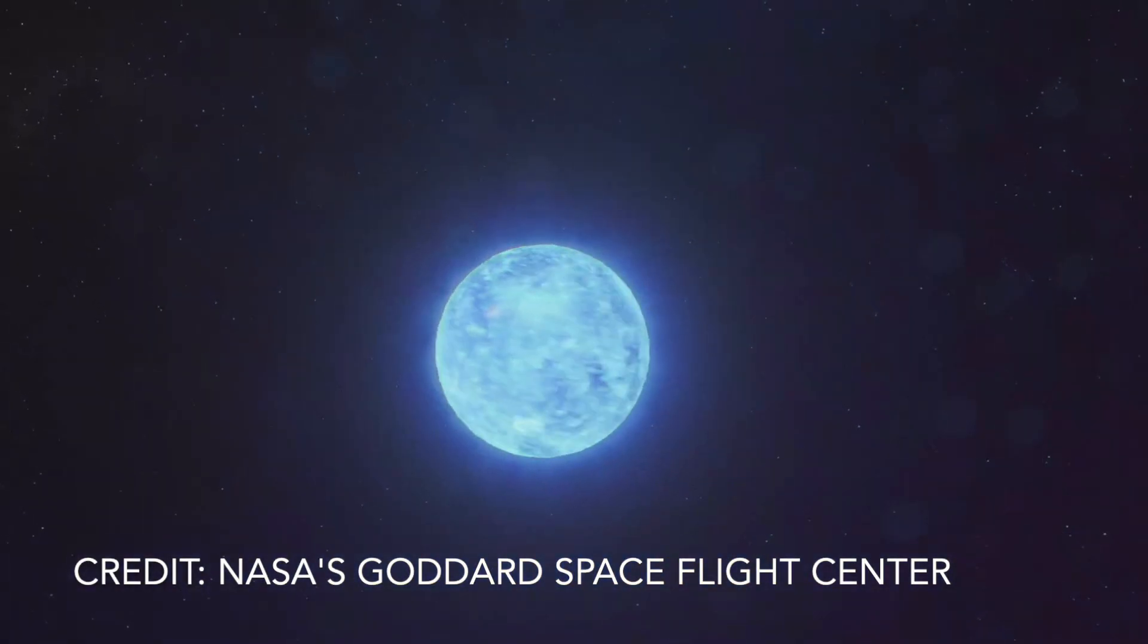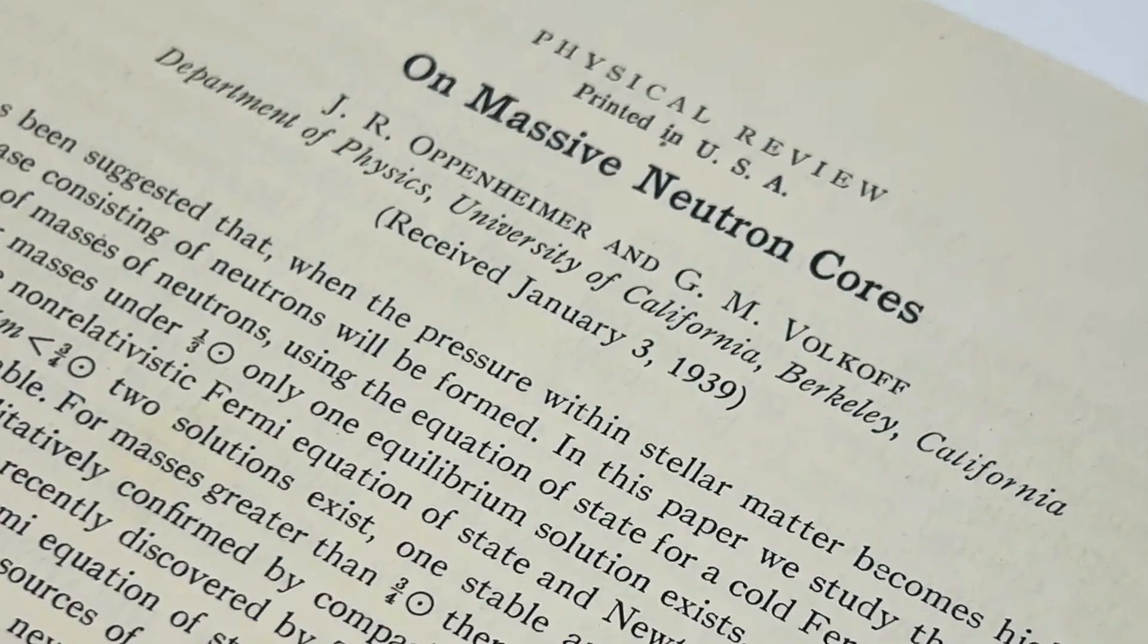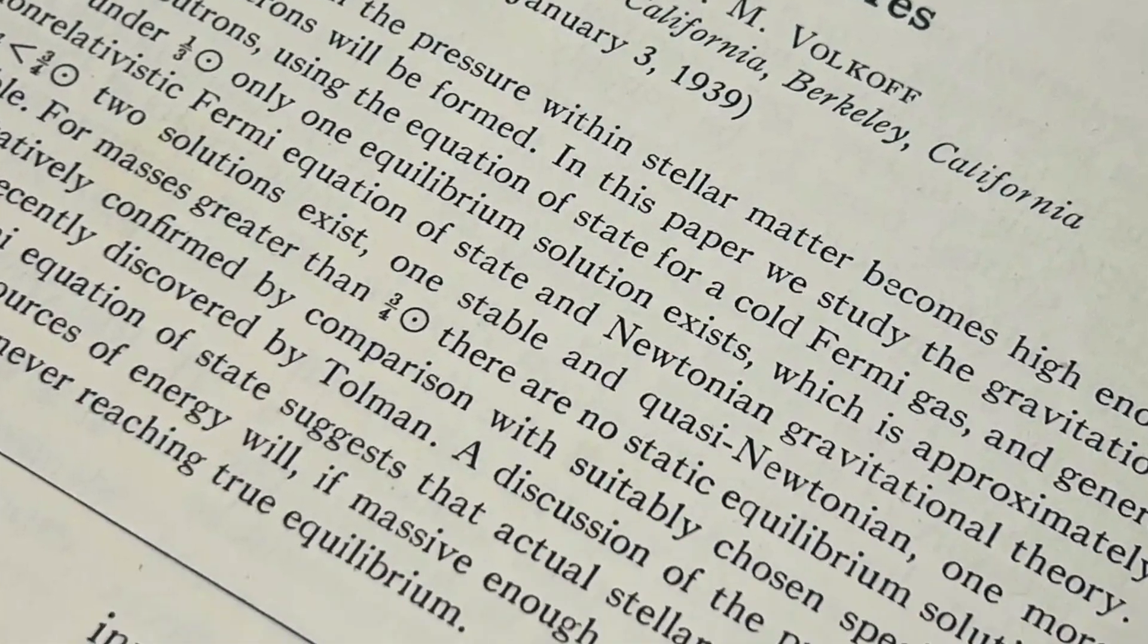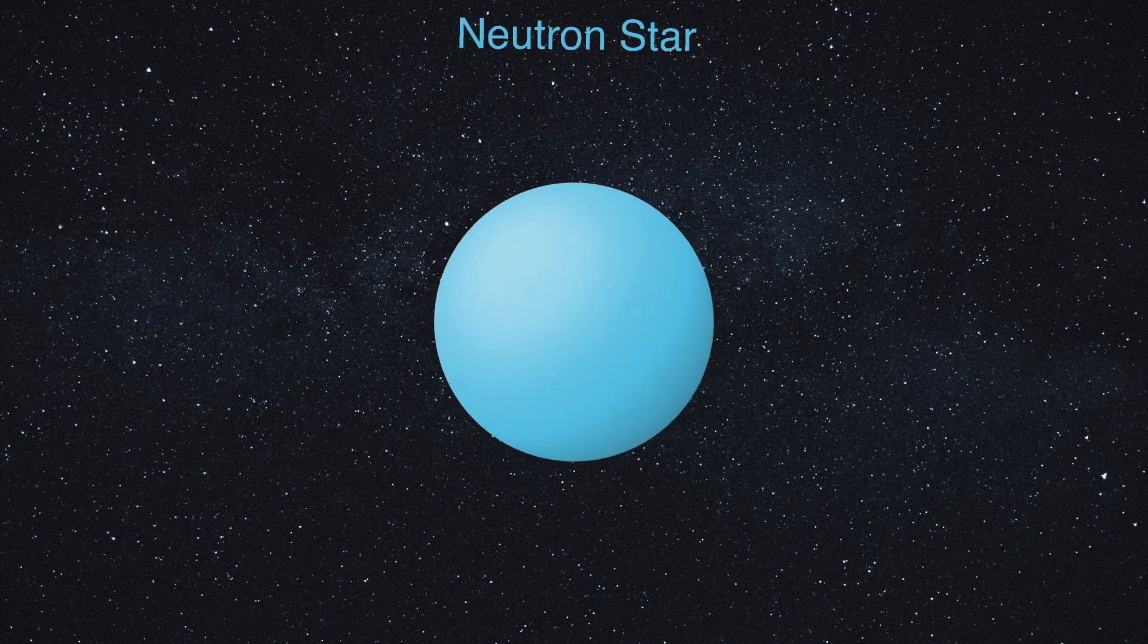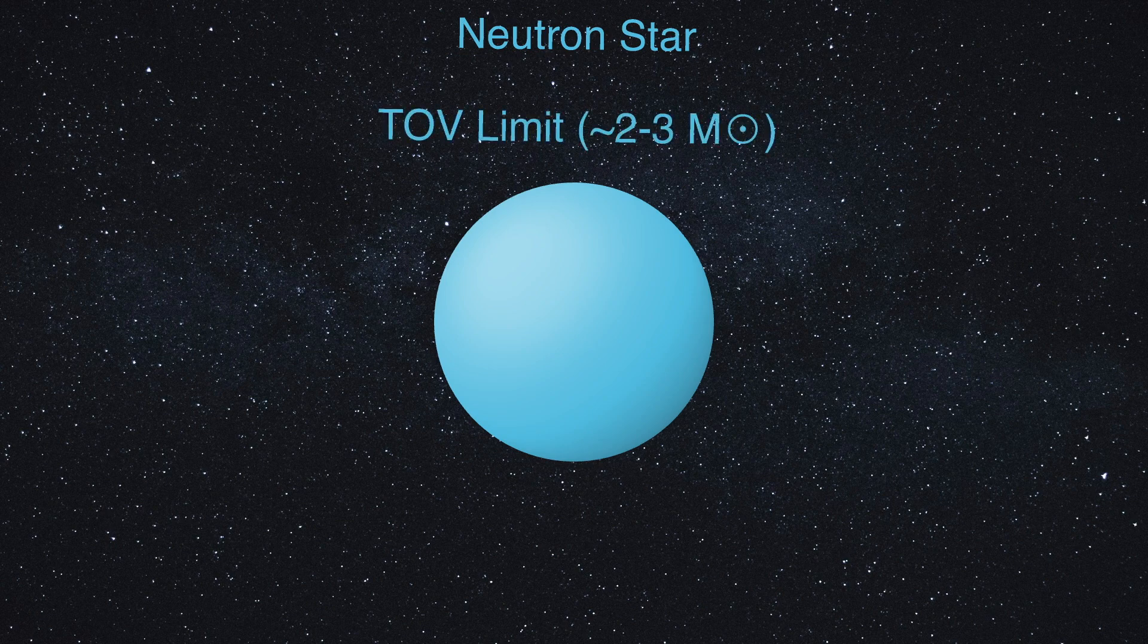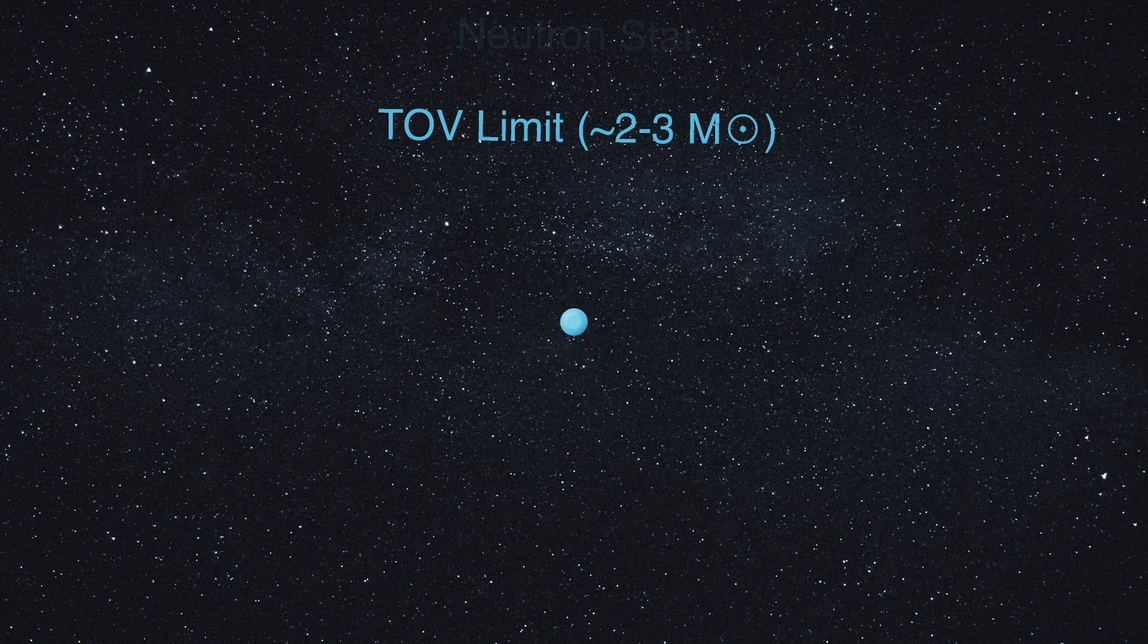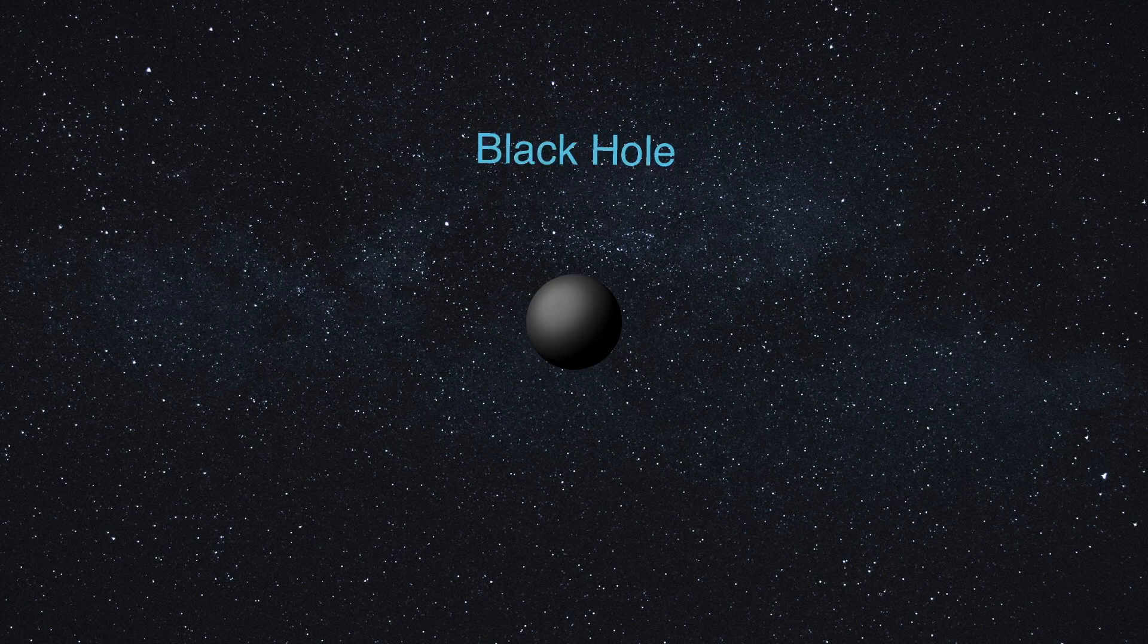Schwarzschild's legacy extends far beyond black holes. His solution paved the way for understanding neutron stars, the dense remnants of stellar collapse. So, just months after their previous paper, Oppenheimer, along with Volkoff and Tolman, made a groundbreaking calculation to determine the maximum mass a neutron star could have before collapsing under its own gravity. This critical threshold, which is now known as the TOV limit, showed that if a neutron star exceeded two to three solar masses, no pressure in nature could withstand gravity, and the star would inevitably collapse into a black hole.